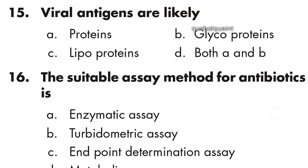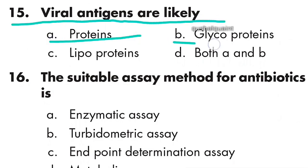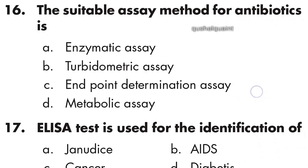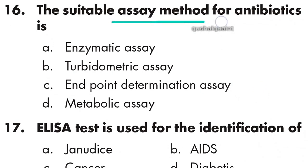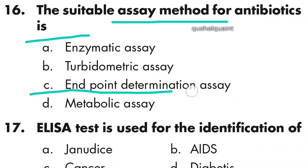Question 15: Viral antigens are likely proteins and glycoproteins. Option D, both A and B, is right. Question 16: The suitable assay method for antibiotics is the endpoint determination assay. Option C is right.